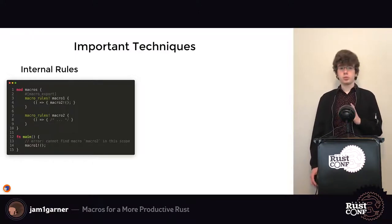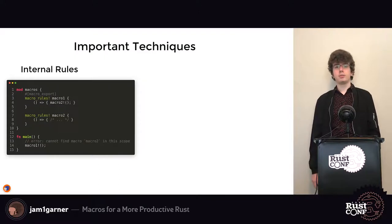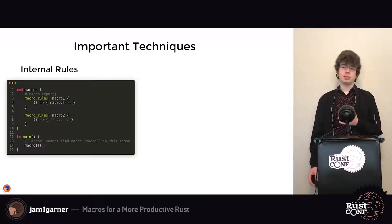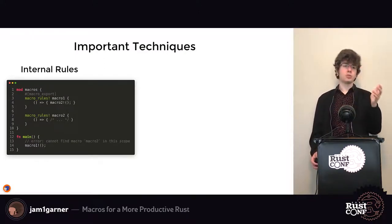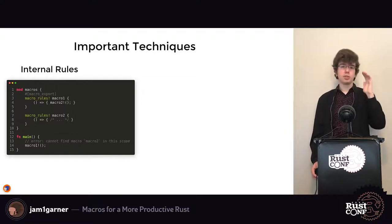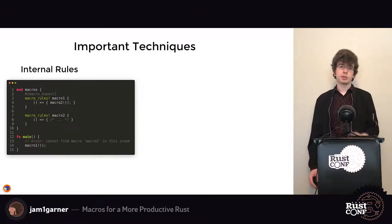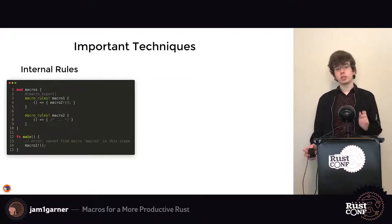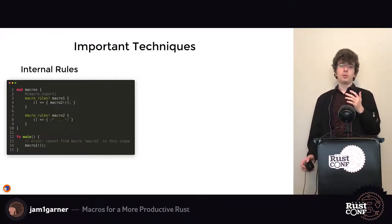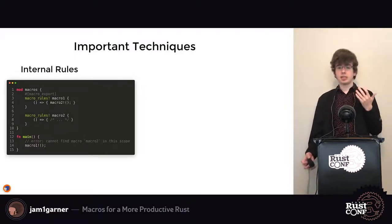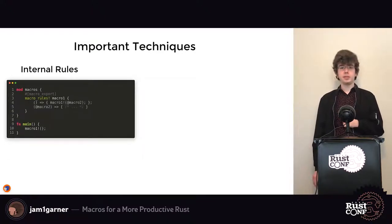An intermediate technique for macro_rules macros is internal rules. In this example we have two macros — macro one and macro two — where macro one calls macro two. That might be necessary because the only way to encode multi-step parsing logic is with multiple patterns or rules, which can require multiple macros. But this causes a problem: if you import macro one into scope but not macro two, macro one tries to use macro two after it expands but it's not in scope.